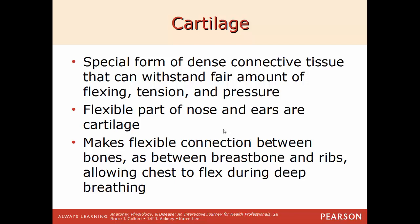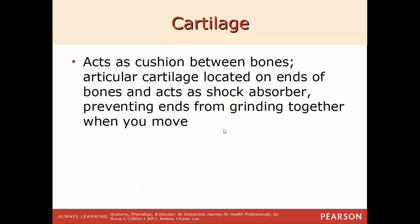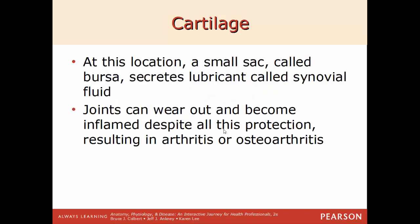Now we'll move on to cartilage. This is a special form of dense connective tissue that can withstand a good amount of flexing, tension, twisting, and pressure. Some types of cartilage are flexible, like in the point of your nose and ears. Cartilage also makes connections between bones flexible — such as between the sternum and the ribs — allowing the chest to expand as you take a deep breath. Articular cartilage found on the ends of long bones acts as a cushion and shock absorber, preventing bones from grinding against each other. You also find this between the vertebrae.